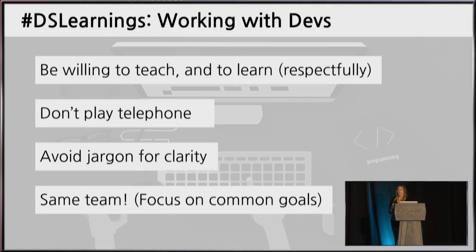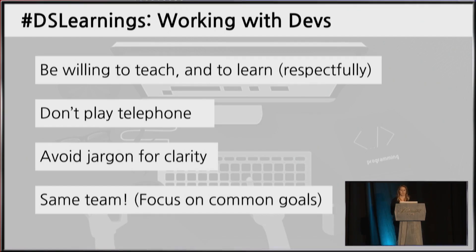A few things there: be willing to teach and to learn, and do so very respectfully. Avoid jargon for clarity — computer scientists tend to use different jargon; for example, 'data models' means something very different than what a model means to me. Making sure we're being very clear about what we mean and actually speaking the same language has been really important. And keep in mind that we're all on the same team, working towards the same goals.